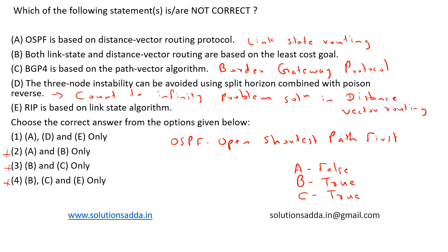Option E: RIP is a link state algorithm. This statement is also false. RIP stands for Routing Information Protocol — it is a distance vector algorithm, not a link state algorithm. So E is also false. Therefore A, D, and E are false, and option 1 — A, D, and E only — is the correct answer.